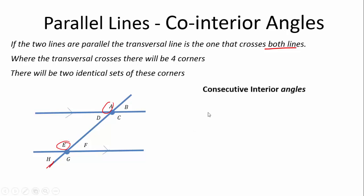So, co-interior stands for consecutive interior angles. I've just written this out consecutive, because it gives a better understanding of what we're talking about. Consecutive means one after the other. Interior means on the inside.